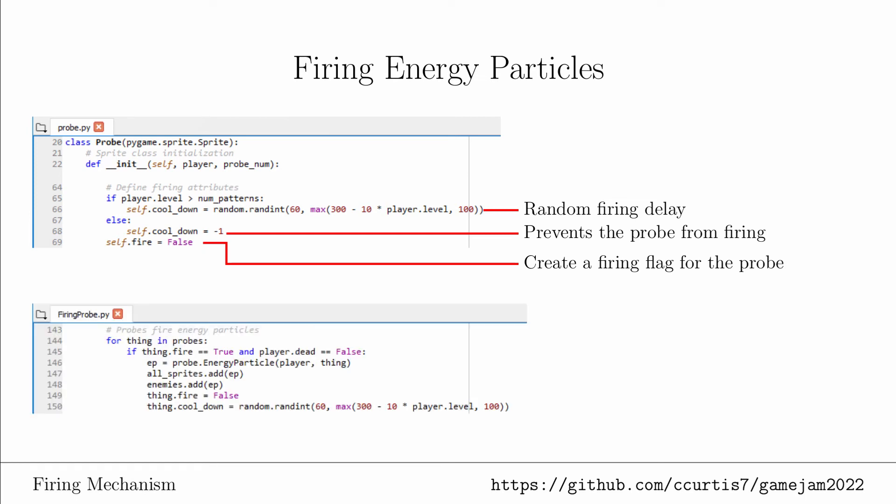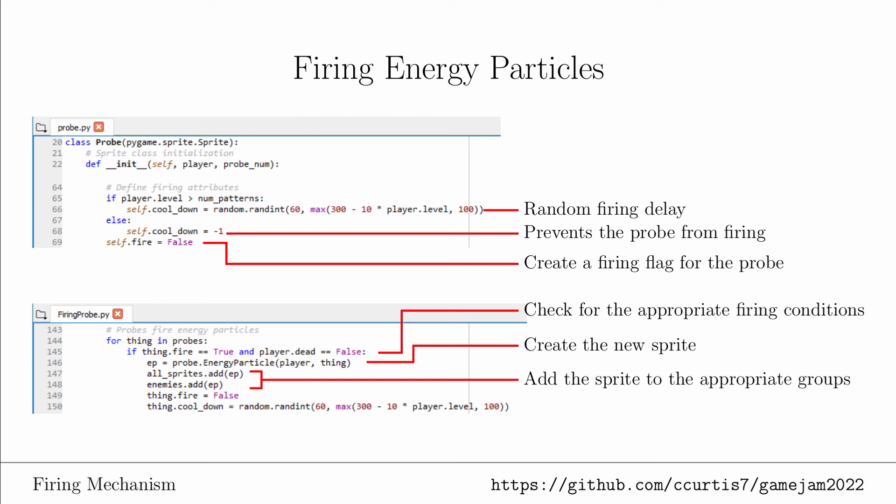The process of firing energy particles is similar to the player's laser. When we update the game state, we are going to loop through all the probes and check for the firing flag. If the firing flag is true and the player is not dead, then we will launch into creating an energy particle. And the pattern here should be familiar. We create the sprite, then add the sprite to the appropriate groups, and then reset the flag and cooldown timer.